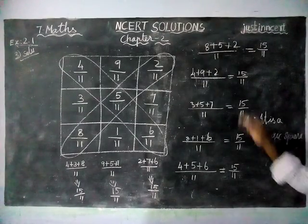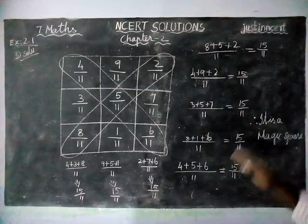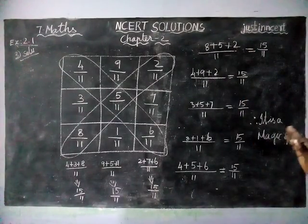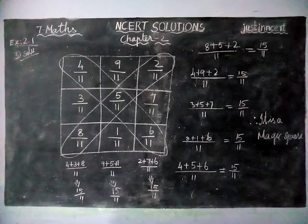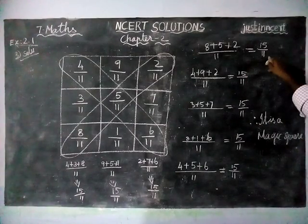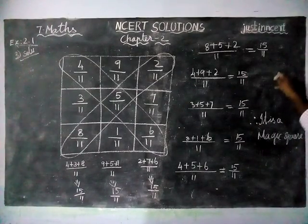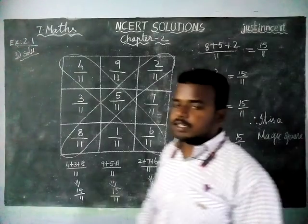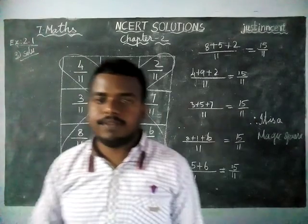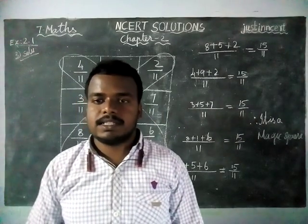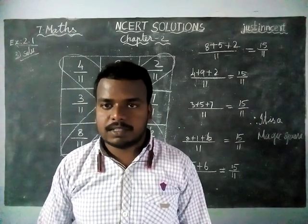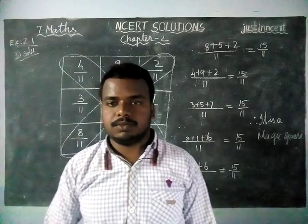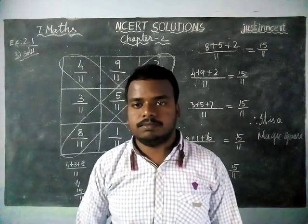All its rows, columns and diagonals are equal to 15 by 11. Therefore it is a magic square. Thank you students. Kindly give your suggestions in the comments box and share it with your friends also. Thank you.